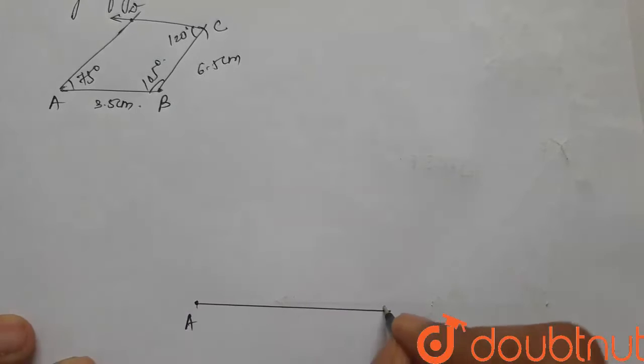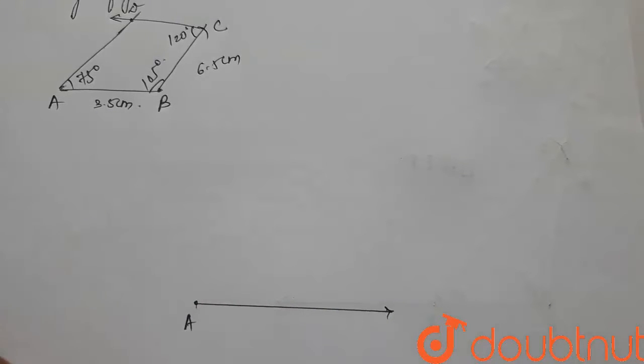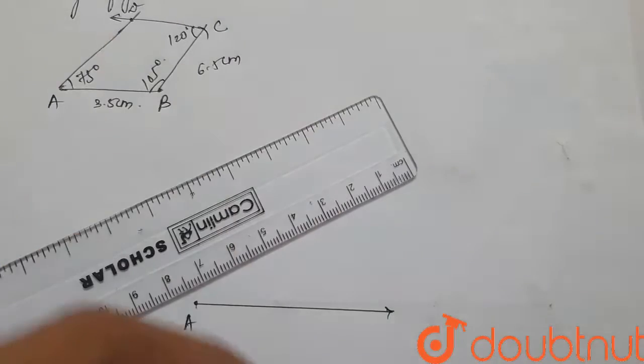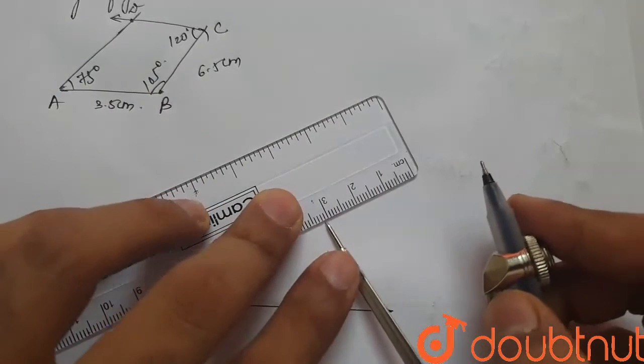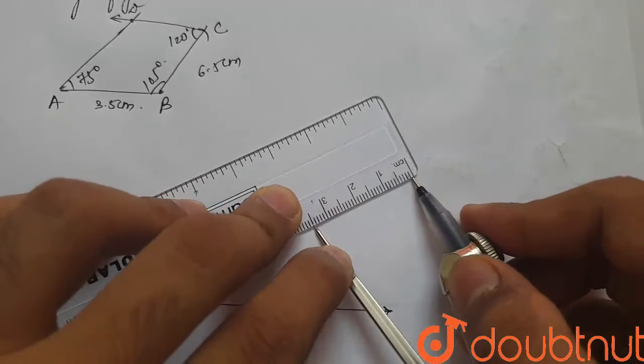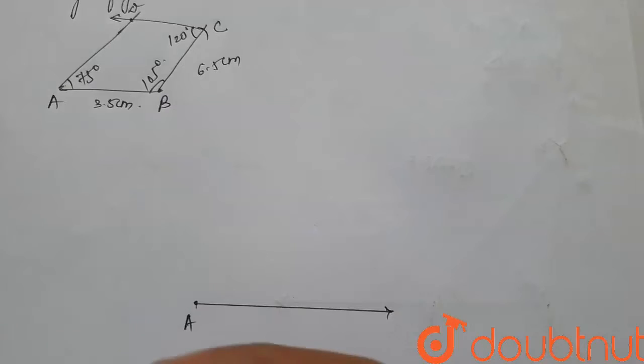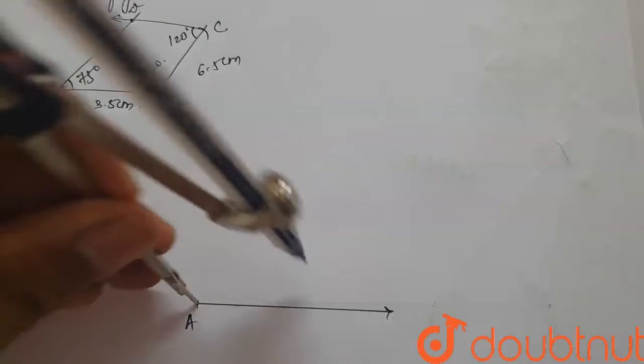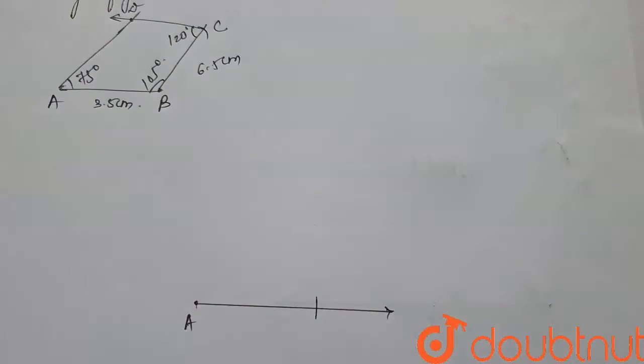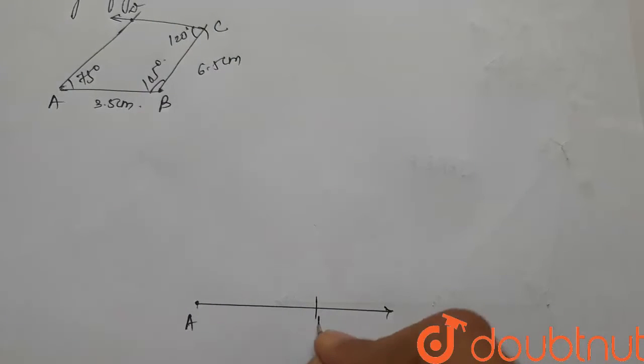We'll first make a 3.5 cm line side AB. We'll take a 3.5 cm distance from the compass, keep it on A and make an arc to get B.